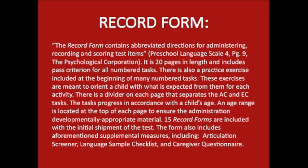The record form contains abbreviated directions for administering, recording, and scoring test items. It is 20 pages in length and includes pass criterion for all numbered tasks. There is also a practice exercise at the beginning of many numbered tasks to orient the child with what is expected. There is a divider on each page separating auditory comprehension and expressive communication tasks, and tasks progress in accordance with the child's age. The form also includes supplemental measures: articulation screener, language sample checklist, and caregiver questionnaire.